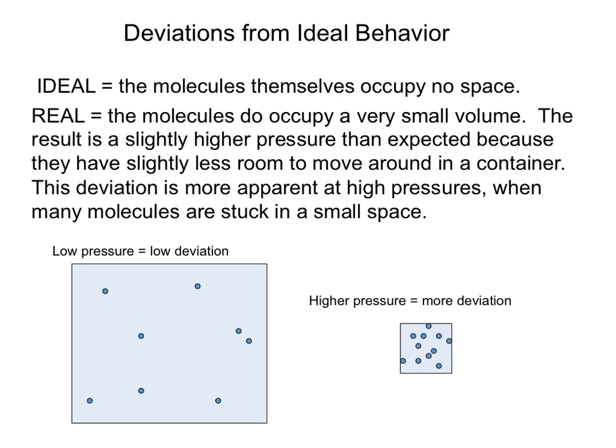We recently talked about kinetic molecular theory and the assumptions that we make based on ideal behavior of a gas. Now what we're going to look at is basically the deviations from ideal behavior and what comes into effect to create those deviations. When we're assuming that something is an ideal gas, we assume that the molecules themselves don't occupy space. The reality of it is that molecules do occupy space, they're three-dimensional structures.